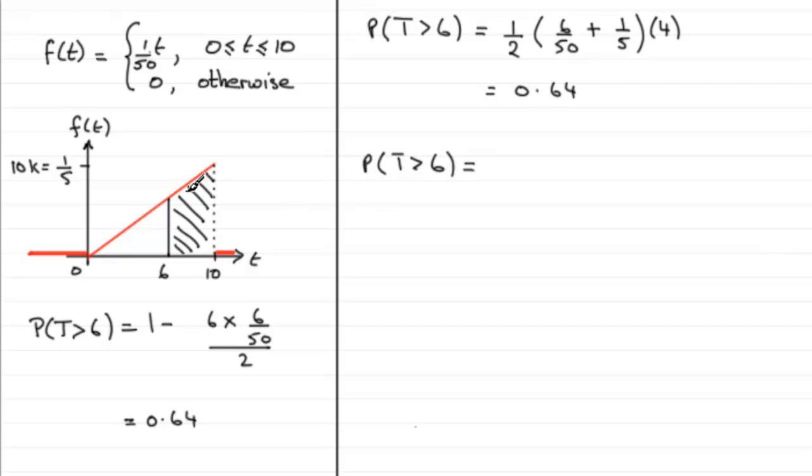Working it out by integration to get this area, it becomes the integral of our probability density function f(t) with respect to t going between 6 and 10. So all we need to do is integrate f(t) being t/50, integrated with respect to t from 6 to 10.